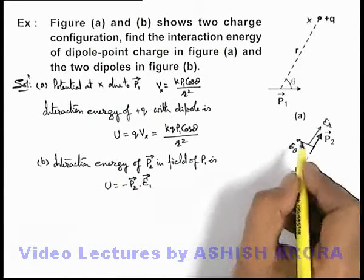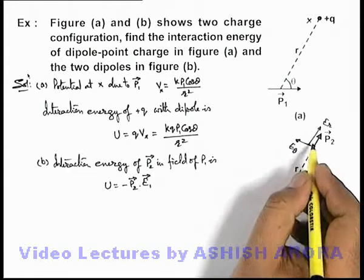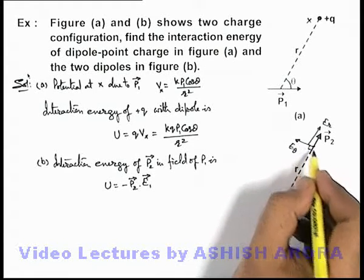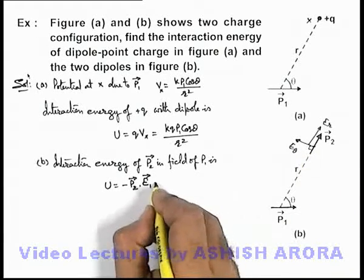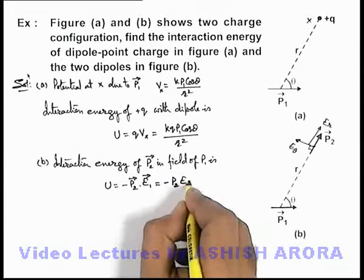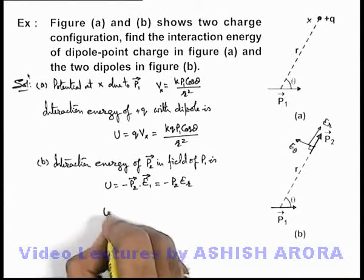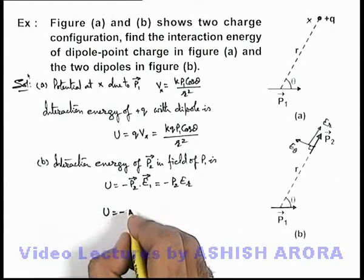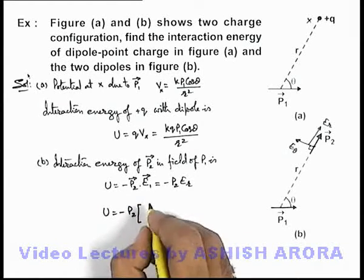In this situation we can see that the transverse component of electric field due to p1 at p2 is at right angle to p2, so its dot product will be zero. So this can be simply written as minus p2 Er, which is the radial component of electric field, we write as